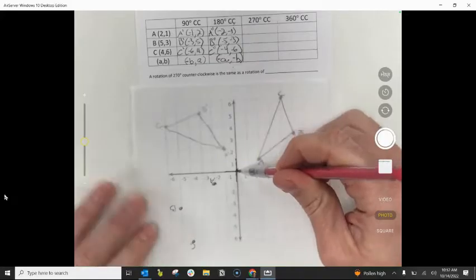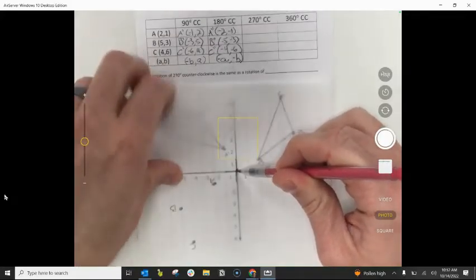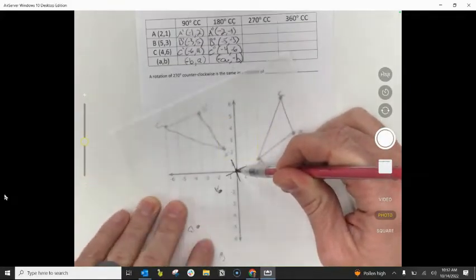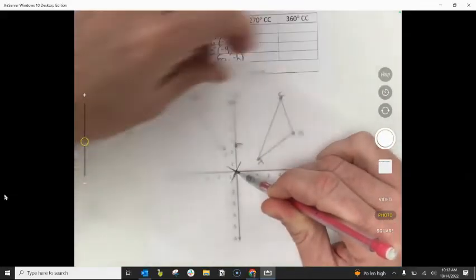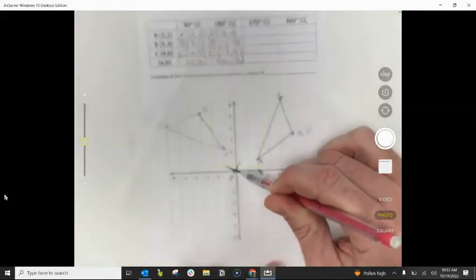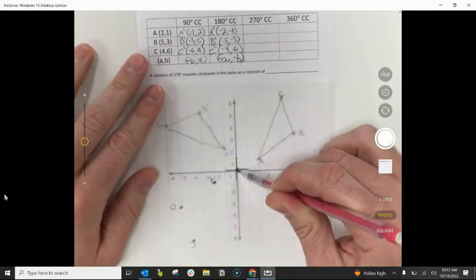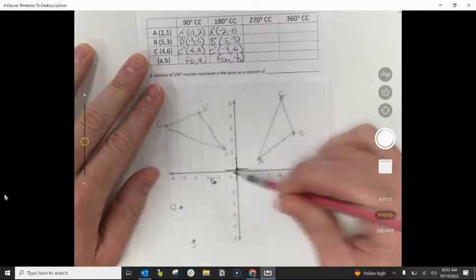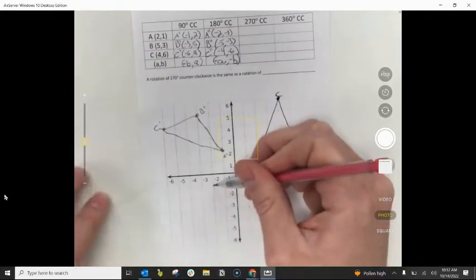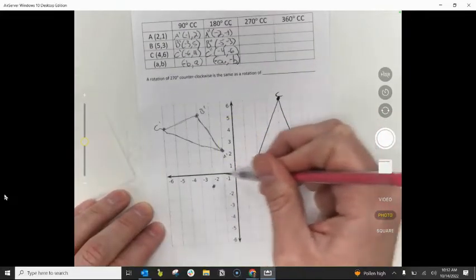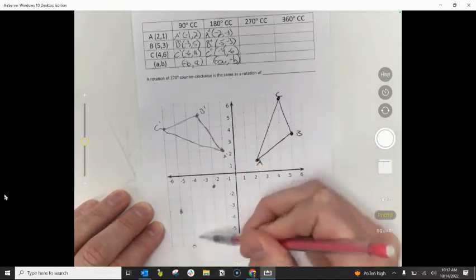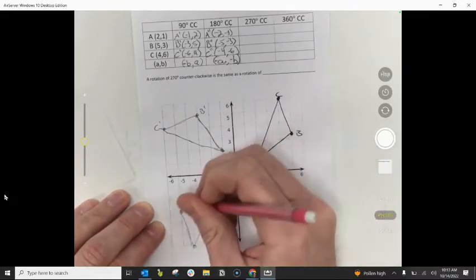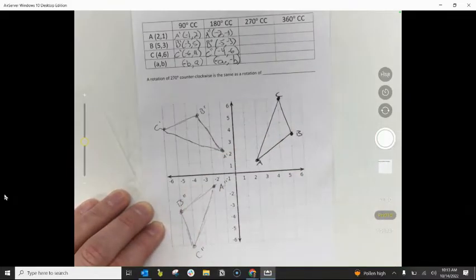Keep in mind, and we'll emphasize this idea in a minute, that 180 degrees counterclockwise rotation, that's the same thing as going 180 degrees clockwise, because halfway around is halfway around, doesn't matter which direction you go. So now we're going to do, let me plot those points real quick. So (-2,-1), (-5,-3), and (-4,-6). A double prime, B double prime, C double prime.